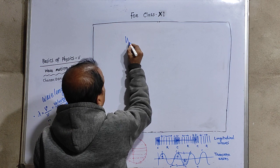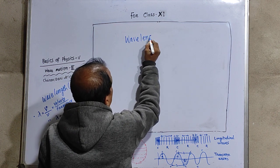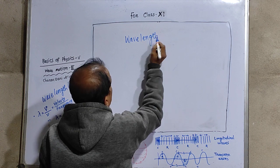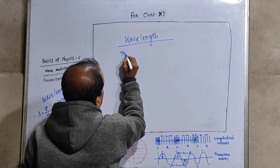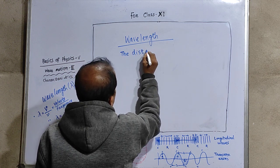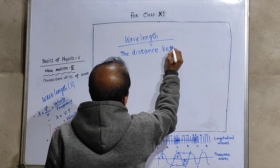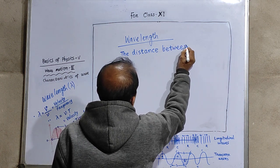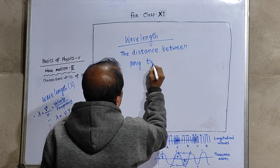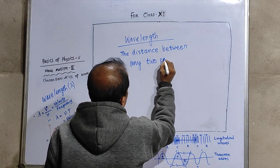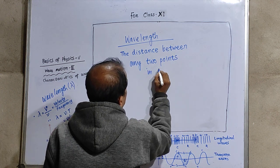So what is wavelength? It is the distance between any two points in same phase.